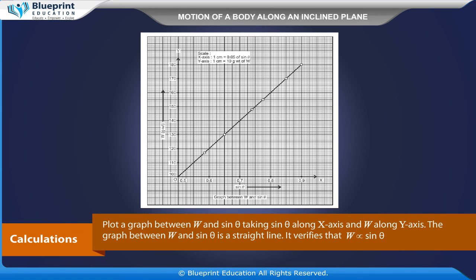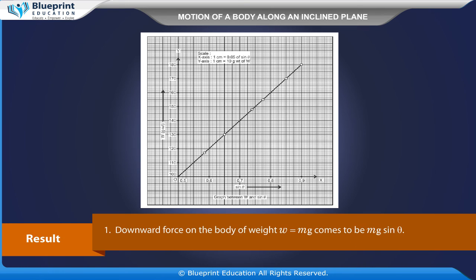It verifies that W is proportional to sinθ. Result: The downward force on a body of weight Mg is equal to Mg sinθ. The graph between sinθ and W is a straight line, confirming that W ∝ sinθ.